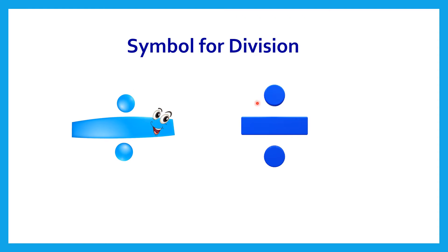This is the symbol for division — a horizontal line with a dot above and a dot below. Just like we have the plus symbol for addition, 'into' for multiplication, and minus for subtraction, this is the symbol for division. It is known as the obelus, and it was introduced by a Swiss mathematician, Johann Rahn, in 1659.